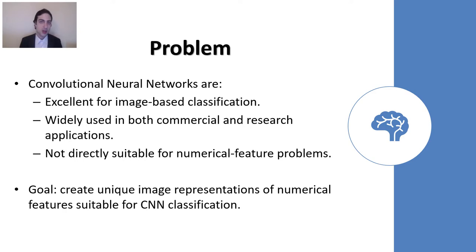The issue is that they're not directly suitable for numerical feature problems where you have a feature vector consisting of numbers essentially. You just don't feed that to CNNs and there isn't a way of converting that properly. Usually people use DNNs for that, but DNNs are not always successful in such problems. So we are providing an alternative here. Our goal is to convert numerical feature vectors into image representations where each number is uniquely represented to provide successful CNN classification.